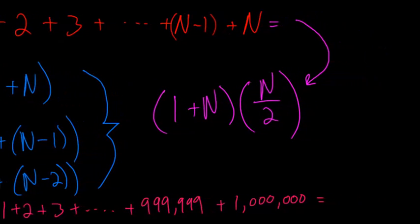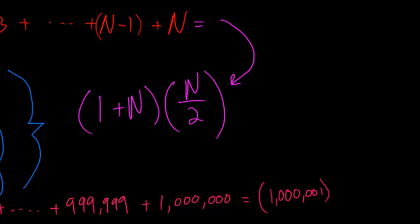then our n value is 1 million, so it'd be 1 million and 1 multiplied by half of 1 million, which is 500,000.